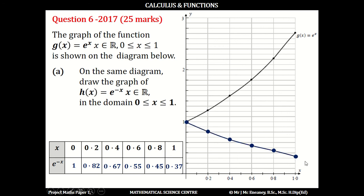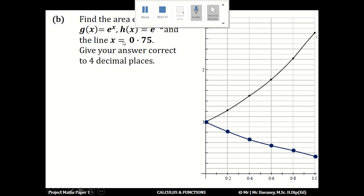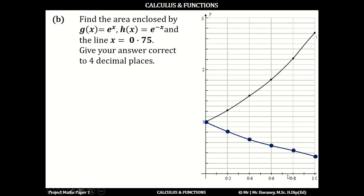If we join the dots, this gives us the curve h(x) = e^(-x). For part B, we want to find the area enclosed by g(x) = e^x, h(x) = e^(-x), and the line x = 0.75. Give your answer correct to four decimal places. We've just drawn h(x) = e^(-x). Now for the line x = 0.75, we draw a vertical line going up from x = 0.75.